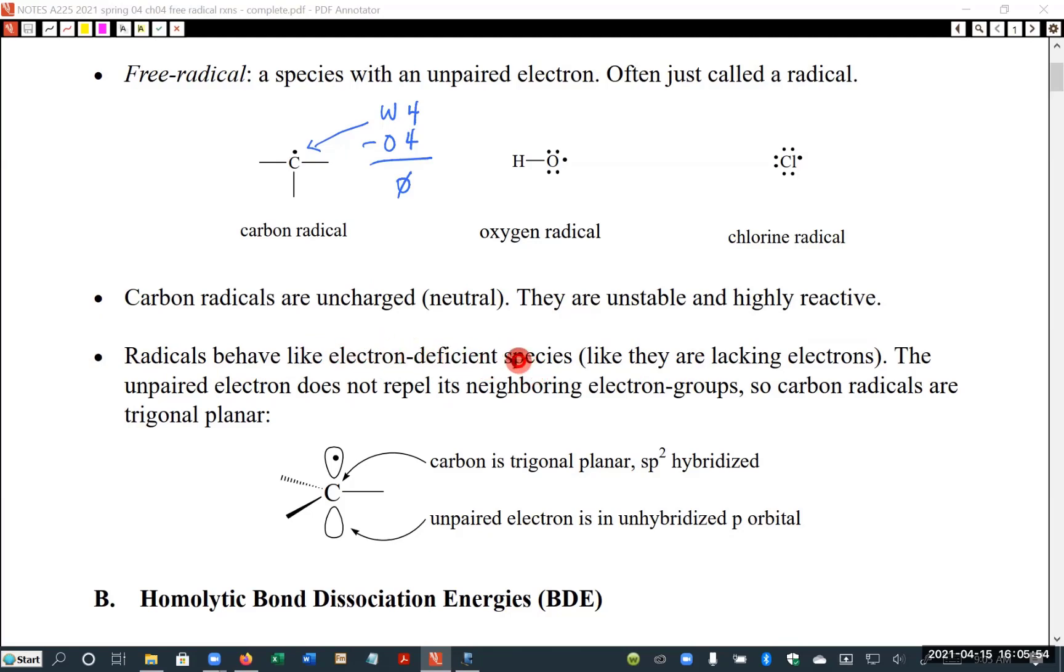So it turns out that that single electron doesn't repel neighboring electron groups. So if you recall in our VSEPR, valence shell electron pair repulsion, that model basically said that pairs of electrons repel each other. So it turns out that a single electron doesn't act like a pair of electrons, doesn't repel. As a result, the carbon radical looks something like this.